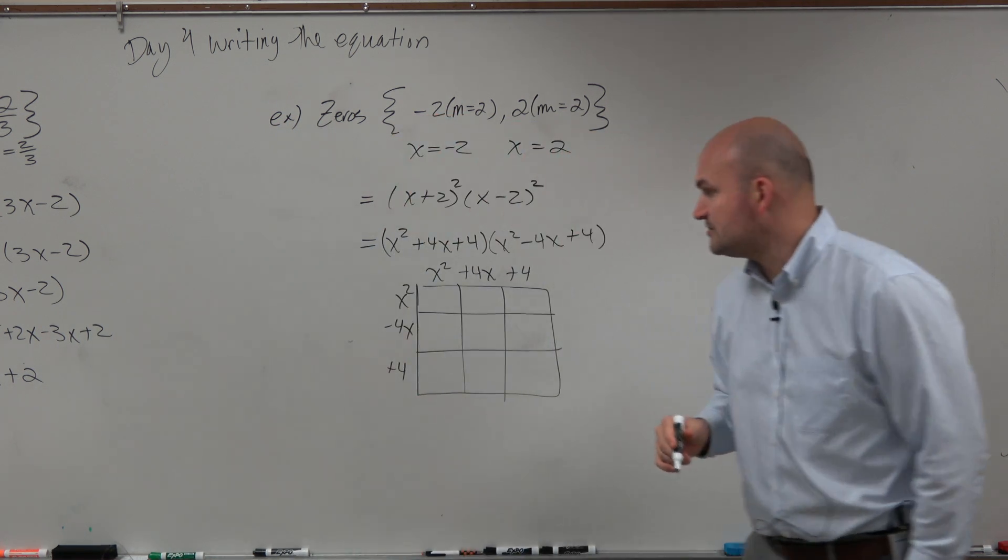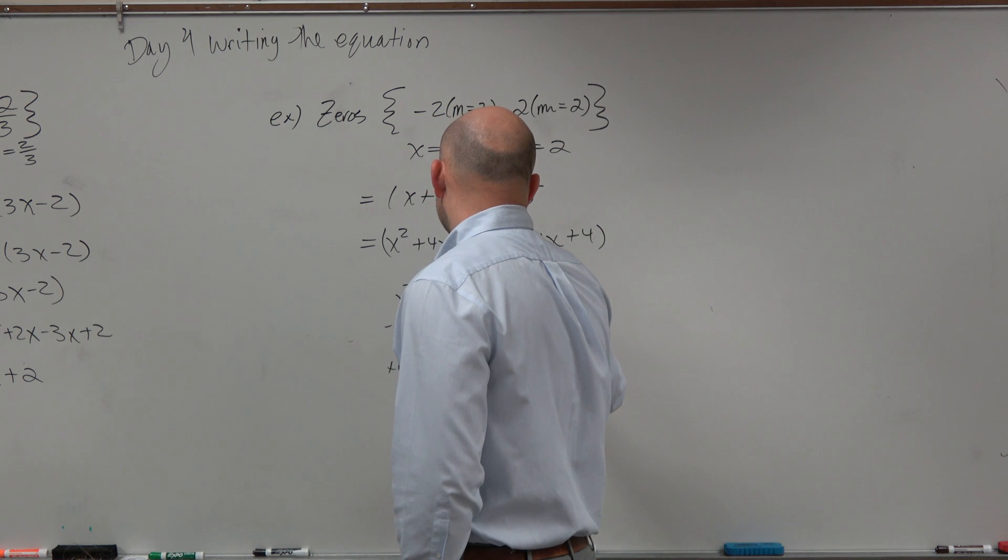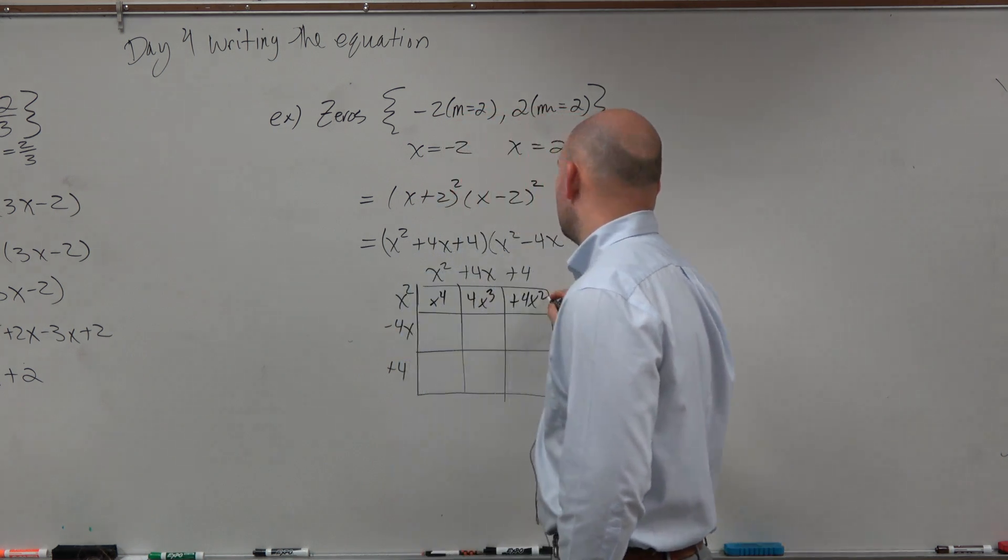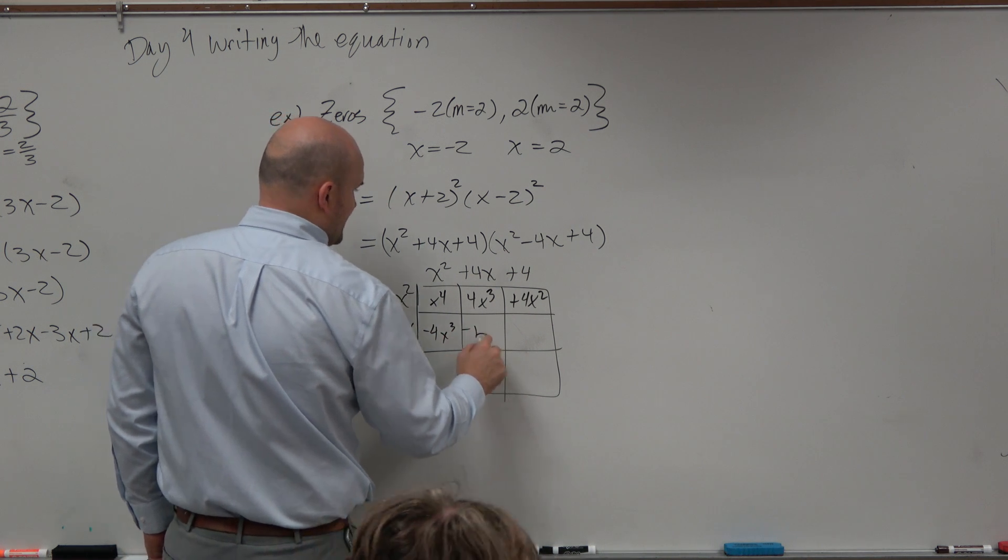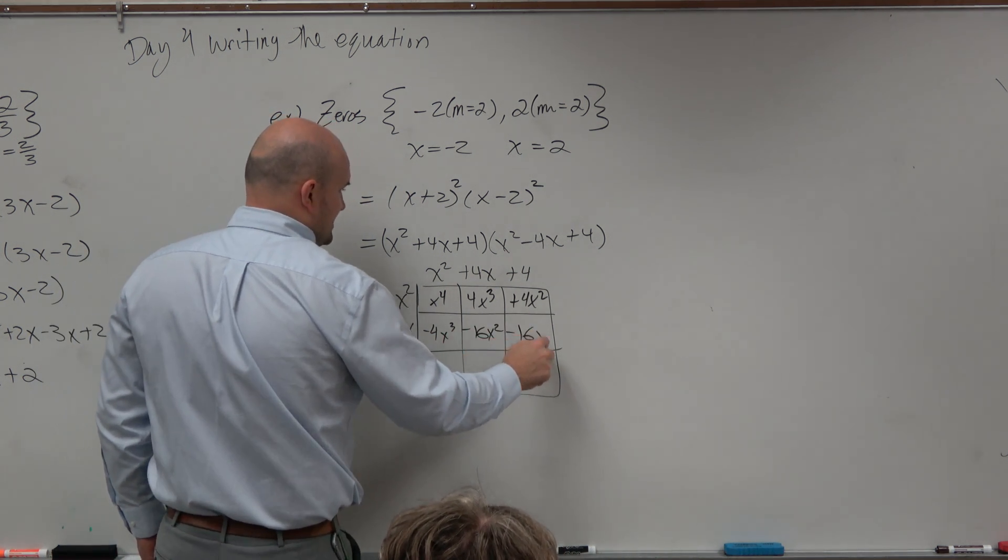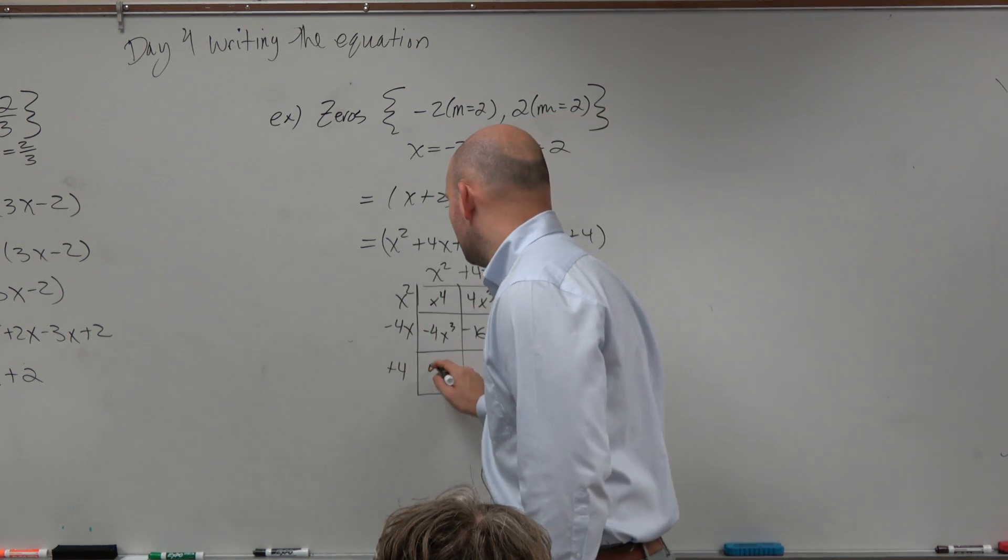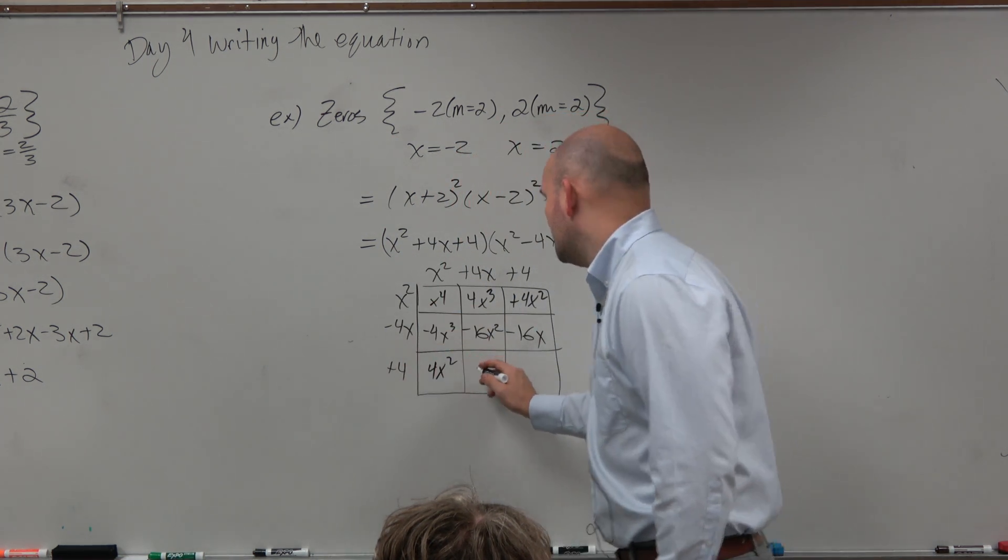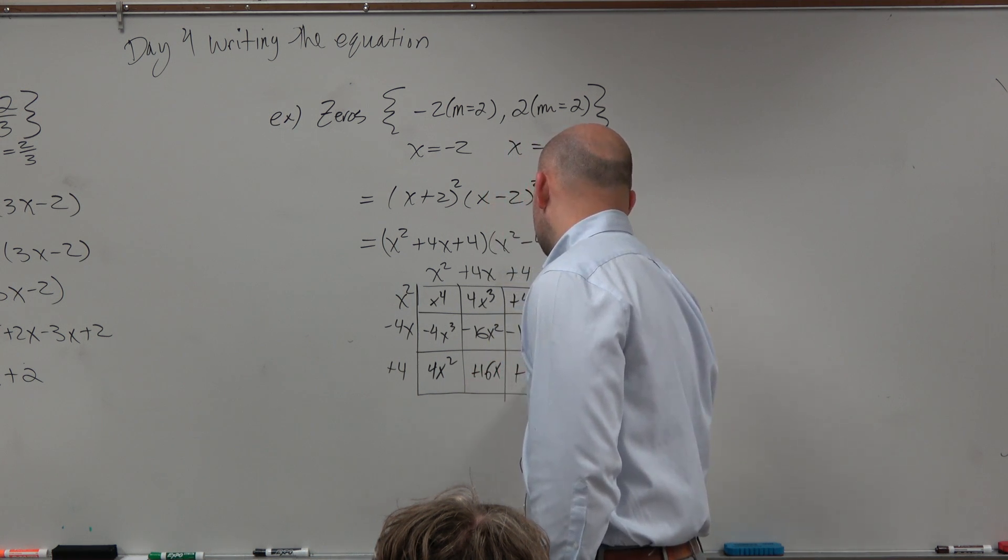Then you just multiply the length and the width for each box. So x² times x² is x to the fourth. 4x³ plus 4x². Over here, negative 4x³ minus 16x² minus 16x. And last, 4 times x² is 4x², plus 16x, plus 16.